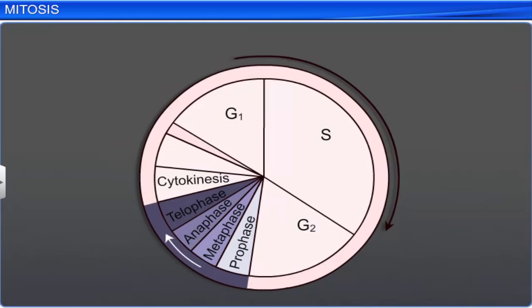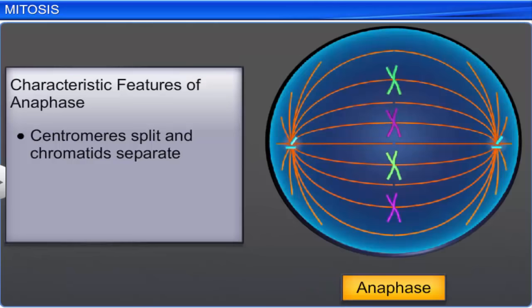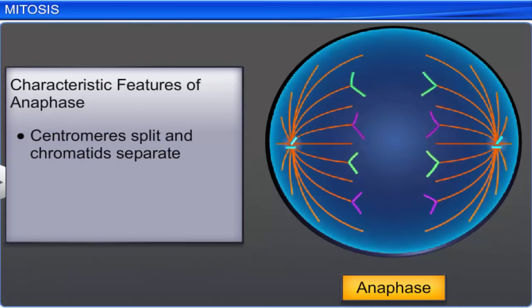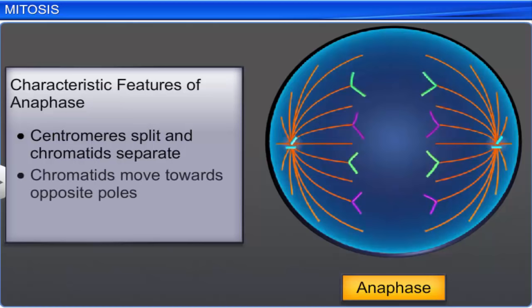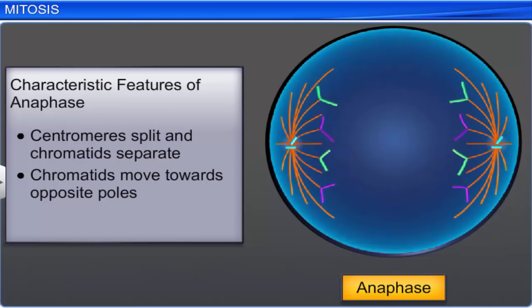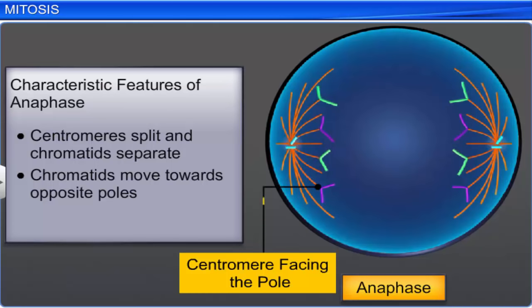Metaphase is followed by the anaphase. At the start of this stage, the centromere of each chromosome splits simultaneously and the chromatids separate. These daughter chromatids are the chromosomes of the future daughter nuclei. The chromatids then slowly move towards opposite poles. The centromeres of the chromatids face the pole and are at the leading edge, while their arms trail behind.